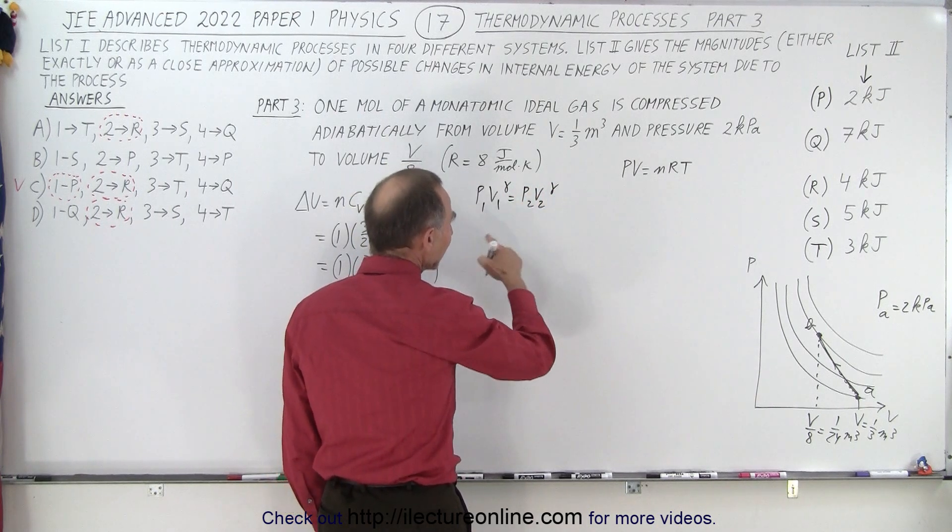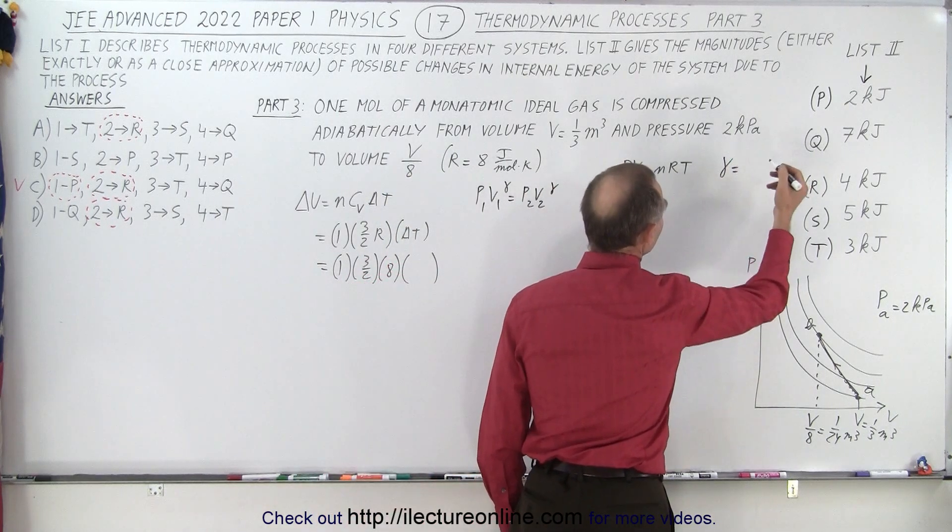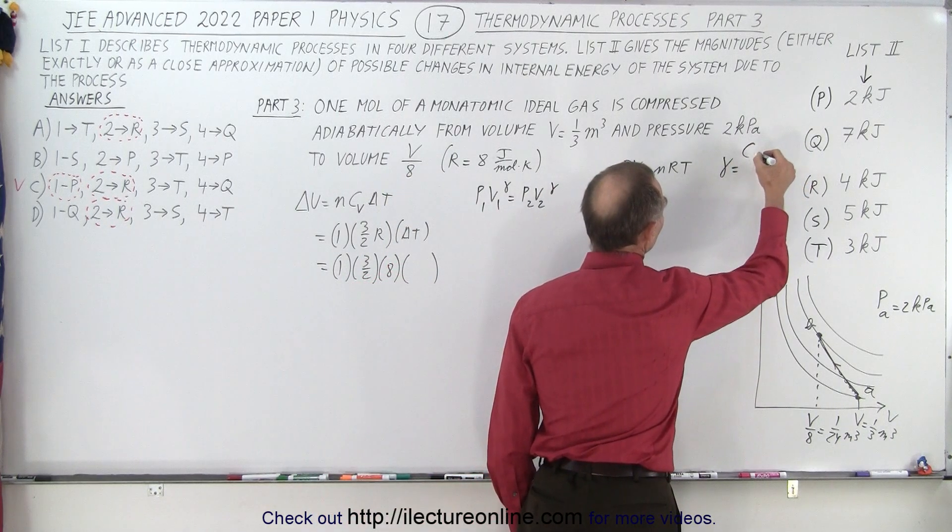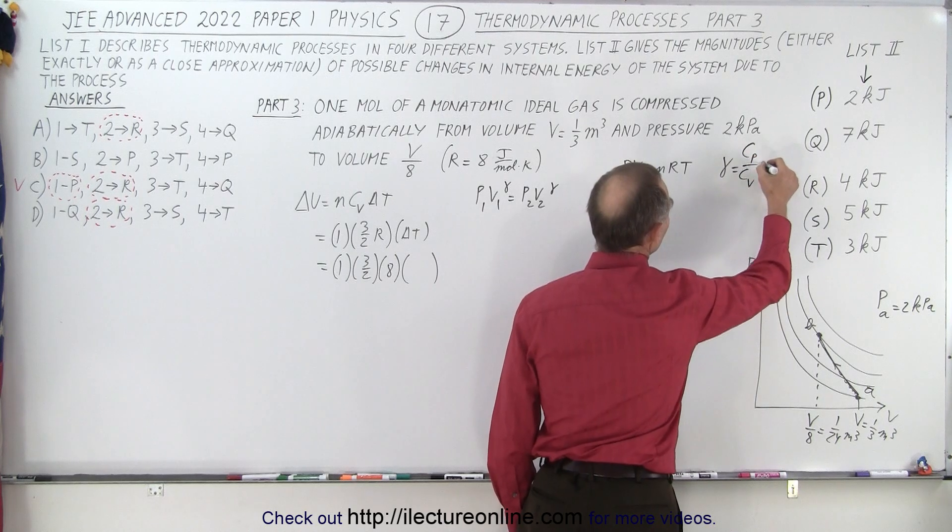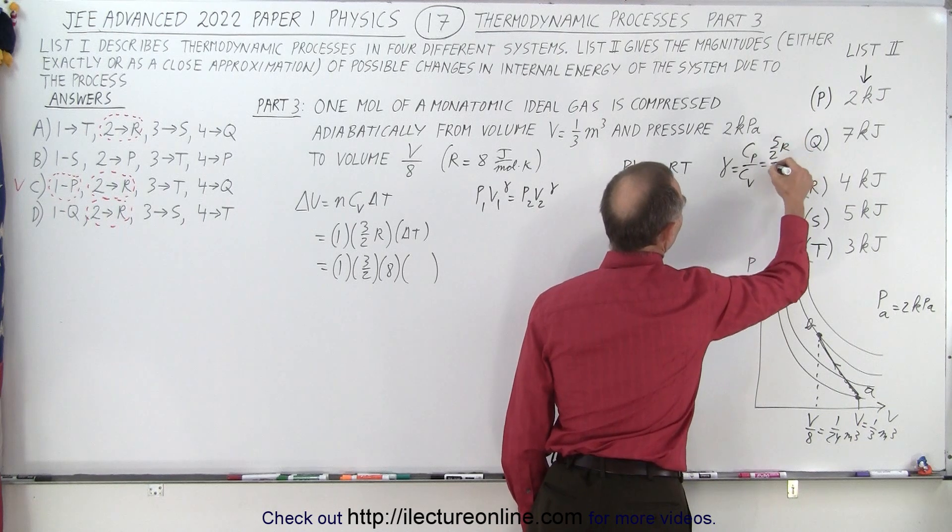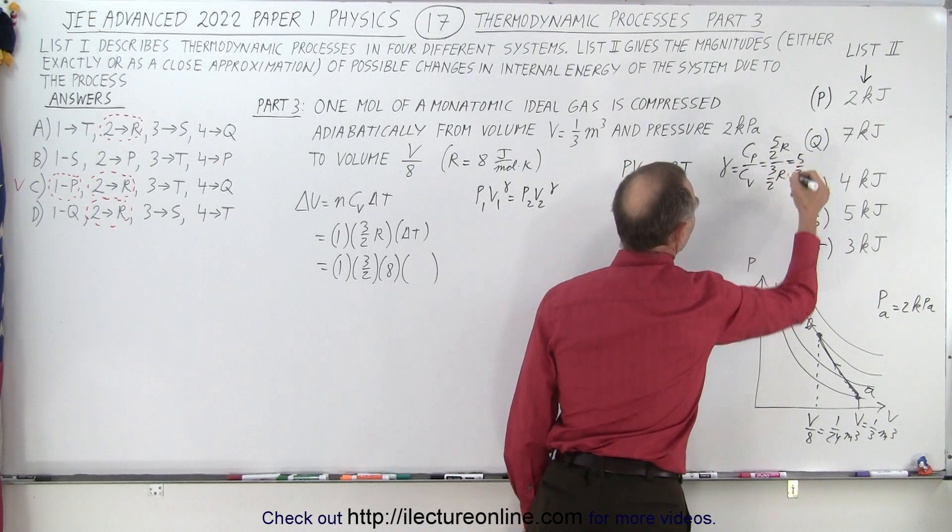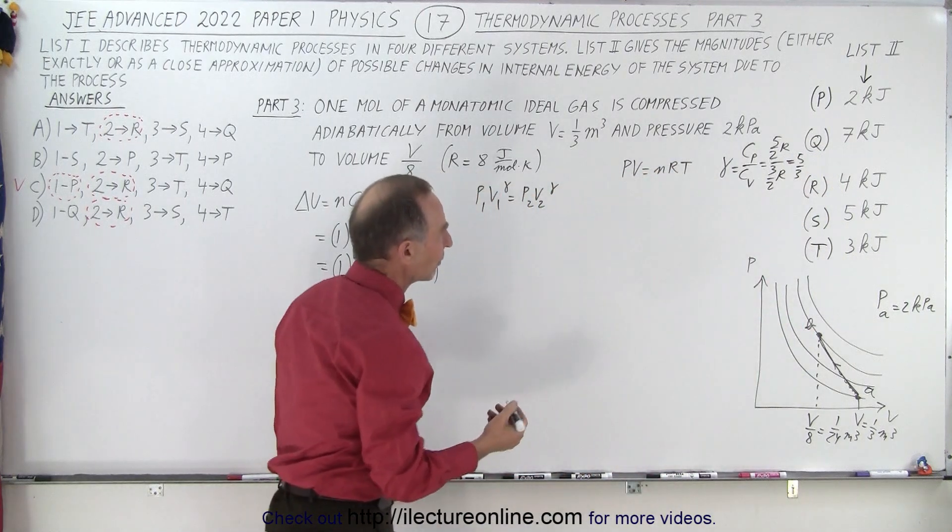P1V1 to the gamma equals P2V2 to the gamma. Gamma for a monatomic gas is C sub P over C sub V, which is 5 over 2R divided by 3 over 2R, which equals 5 over 3. So the gamma is 5 over 3.